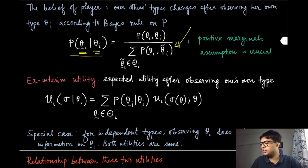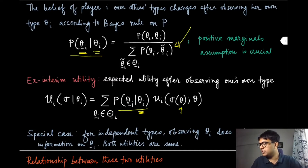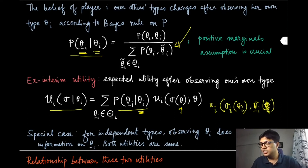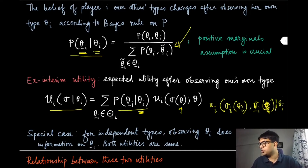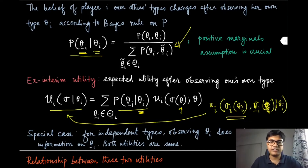The x interim utility is defined as follows: since player i knows its own type, it takes the expectation with respect to the posterior distribution over all other players' types. The left-hand side is the x interim utility, which is a function of u_i of sigma_i(theta_i) and sigma_{-i}(theta_{-i}) — it is not a function of theta_{-i} because that has already been integrated out. It is a function of theta_i, which is deterministically known to player i.